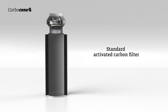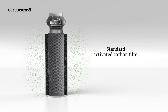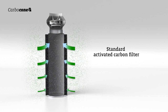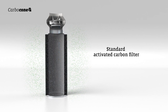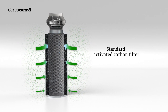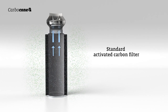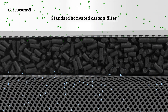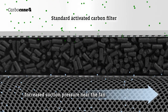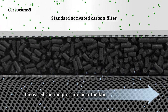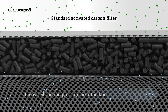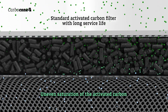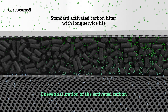Standard activated carbon filters have an even activated carbon bed. As a result, the filter is unevenly traversed by the air, since the intake forces in the upper part of the filter are stronger and lead to more airflow in this area. The reason for this is the stronger suction pressure near the fan, which decreases towards the bottom of the filter. The air flows unevenly through the activated carbon, and therefore the carbon is unevenly saturated over the long term.